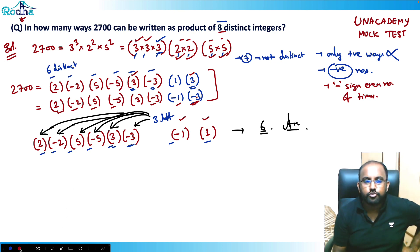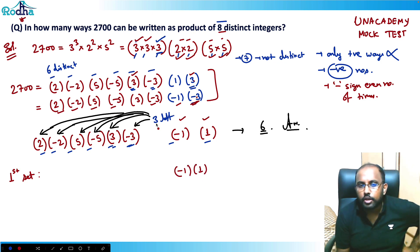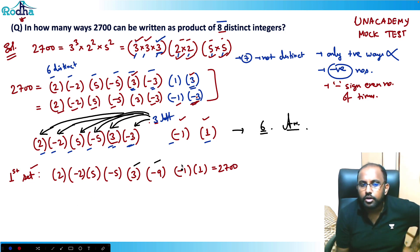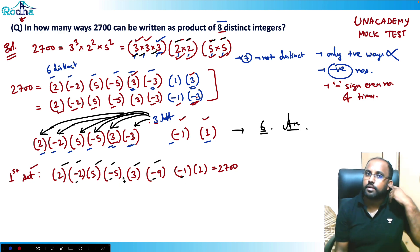For example, the first set of 8 distinct integers: take -1 and 1 and multiply 3 into -3 to get -9. So the set becomes: -9, 1, 5, -5, -2, 2. That's one way. Let's verify: 3×3 = 9, 2×2 = 4, 2×5 = 10, so the product is 2700. The result is positive because the minus sign appears 4 times, which is even.